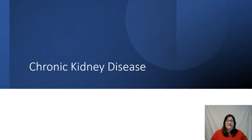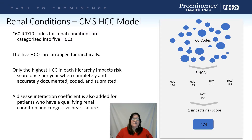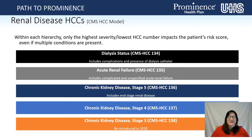Let's talk about chronic kidney disease in your clinical documentation. There are 60 ICD-10 diagnosis codes for renal conditions that are categorized into five HCC categories. The five HCCs are arranged hierarchically. Only the highest HCC in each hierarchy impacts the patient's risk score. Here's a visual of the renal diseases specific to the CMS HCC model. Within each hierarchy, only the highest severity — lowest HCC number — impacts the patient's risk score, even if multiple conditions are present.